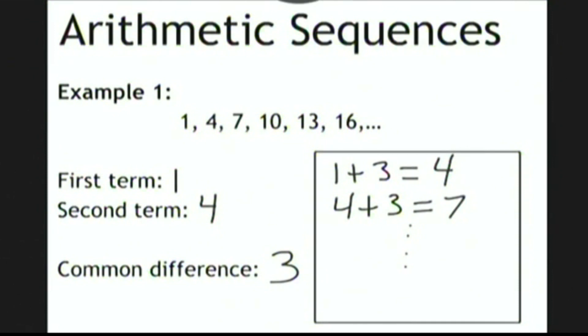So why is it called the common difference? Well, another way to compute the common difference is to subtract any term from the next term. For example, 4 minus 1 is 3, 7 minus 4 is 3, and so on.